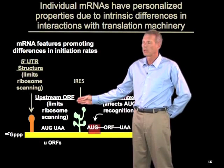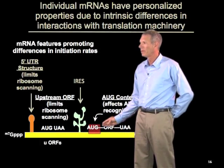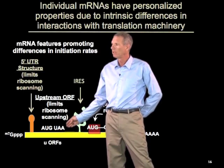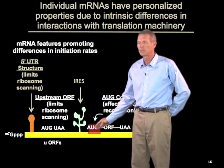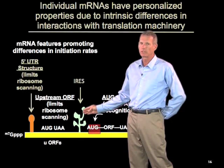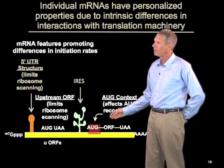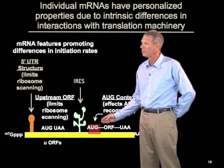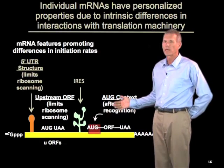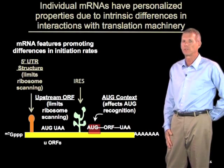Other mRNAs can have what are called upstream ORFs — an AUG and a stop codon before the normal AUG — so that ribosomes loading on the message start at this upstream AUG, stop, fall off, and therefore limit how many ribosomes can get to the normal AUG. IRES elements can also increase translation. The context of the AUG, that is the local sequence context, can affect how well the 43S ribosome recognizes the AUG during scanning. All of these features give personalized rates of translation to mRNAs by affecting how they interact with the translation machinery directly.